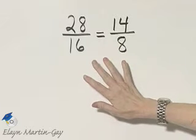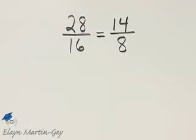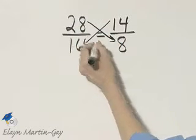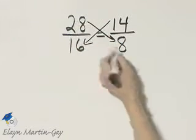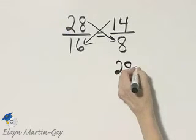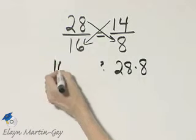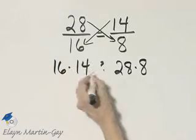To find out if it's true or false, we will look at cross products. This cross product and this cross product. We're looking here at 28 times 8, and we want to know how does that compare with this cross product, 16 times 14.